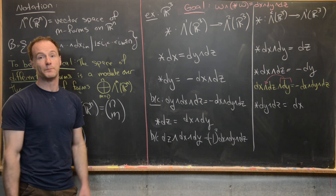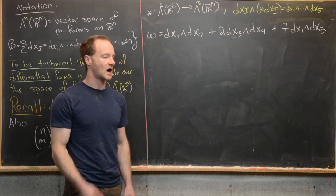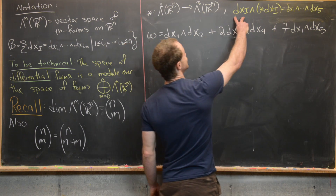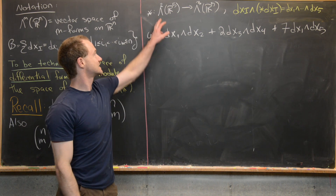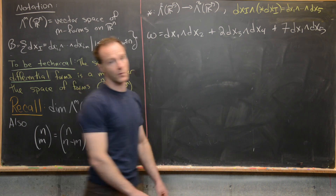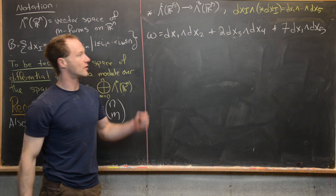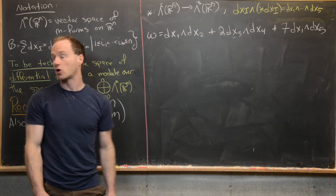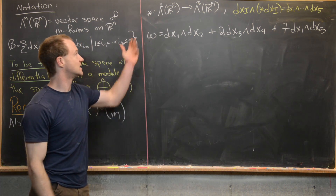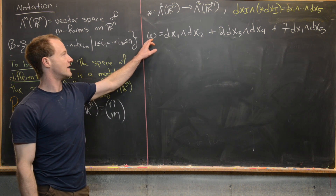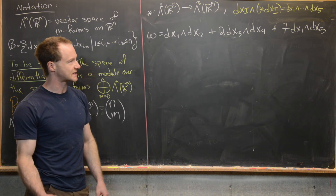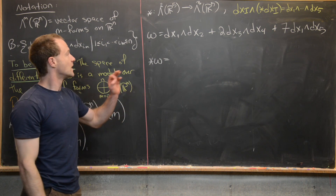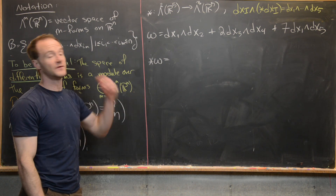Now let's do a bigger example: Hodge duality of two forms on R⁵ and three forms on R⁵. The star operator takes an elementary two form dX_I and turns it into a three form such that when you wedge them together you get dx_1 wedge all the way up to dx_5. You extend that linearly across the vector space of two forms on R⁵. Consider the two form omega equals dx_1 wedge dx_2 plus 2 dx_3 wedge dx_4 plus 7 dx_1 wedge dx_5. By linearity, we star each component individually.